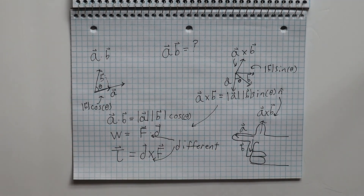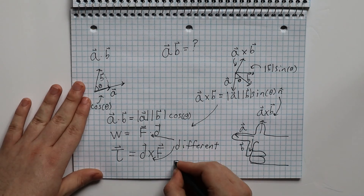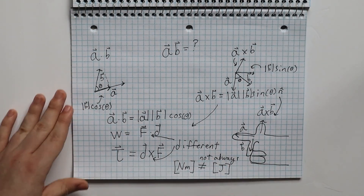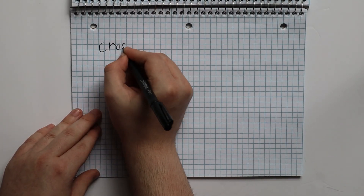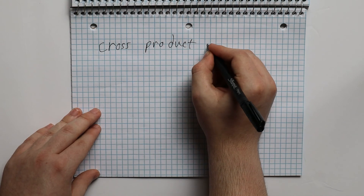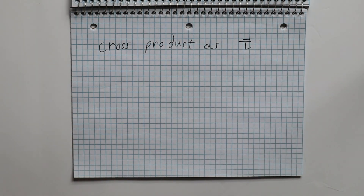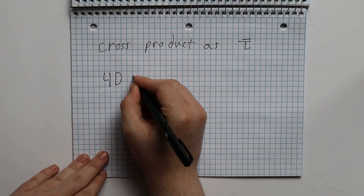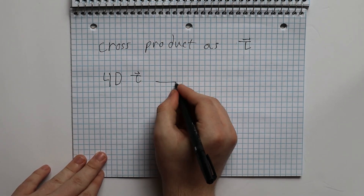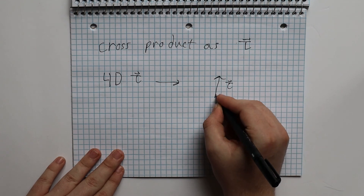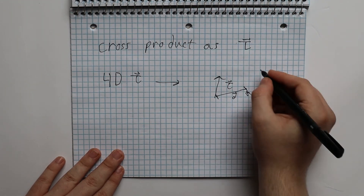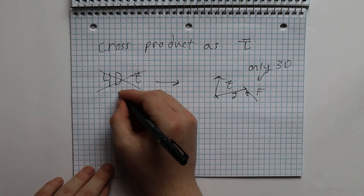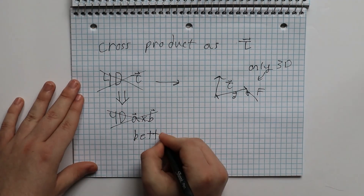This is, I think, the reason why these two quantities are different: they both use different ways of multiplying vectors together. The coolest part about this is that the cross product only works in three dimensions. If we look at the cross product as torque, then this makes sense — there is no such thing as 4D torque, or rather, torque only requires three dimensions to be fully explained: an axis of rotation, the direction of the displacement, and the force. This gives, at least I think, a better way to think about the cross product.